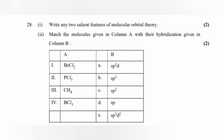Part 2: Match the molecules given in column A with their hybridization given in column B. Answer: BeCl2, sp hybridization. PCl5, sp3d hybridization. CH4, sp3 hybridization. BCl3, sp2 hybridization.